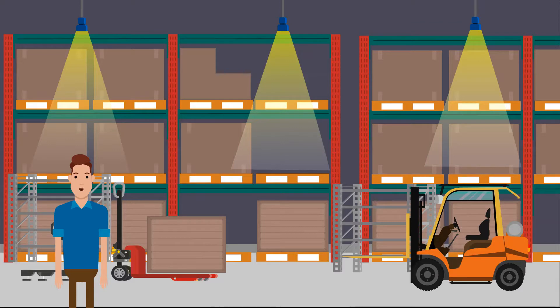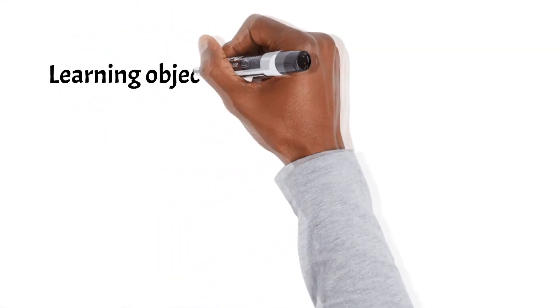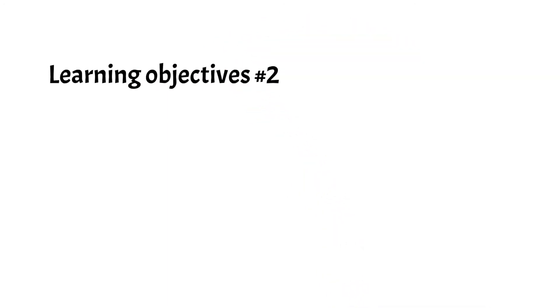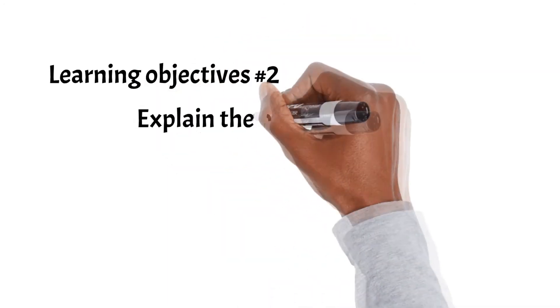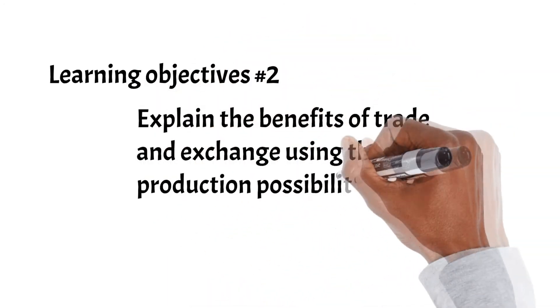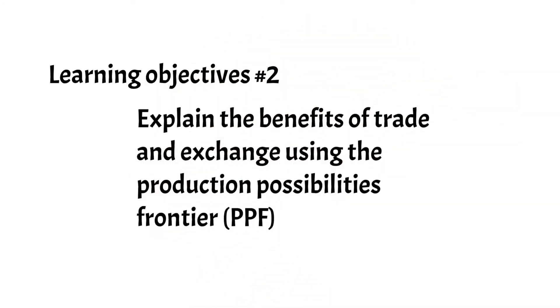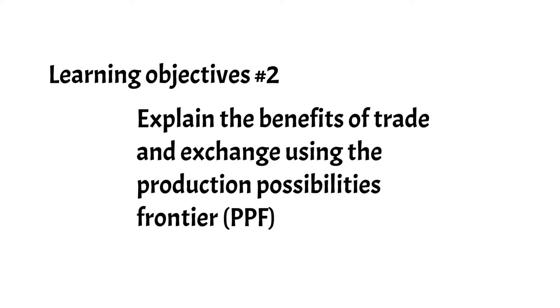To summarize, international trade benefits most incumbents and generates substantial value for the global economy. The second learning objective is to explain the benefits of trade and exchange using the production possibilities frontier, or PPF.